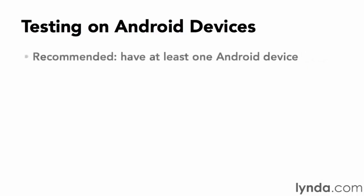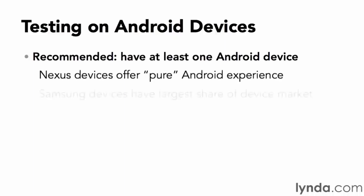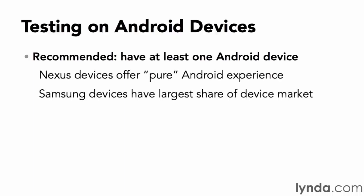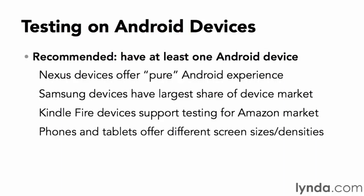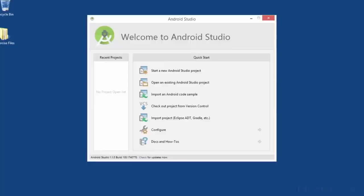When deciding what devices to use for testing, here are some tips. Google Nexus devices offer a pure Android experience without additions from hardware vendors. You might also decide to test on Samsung devices, which have the largest single share of the device market in North America. Kindle Fire devices support testing of features unique to the Amazon ecosystem. If possible, it's useful to have multiple devices — a variety of phones and tablets — but I recommend getting used to using the Android emulator to simulate a broad variety of devices.